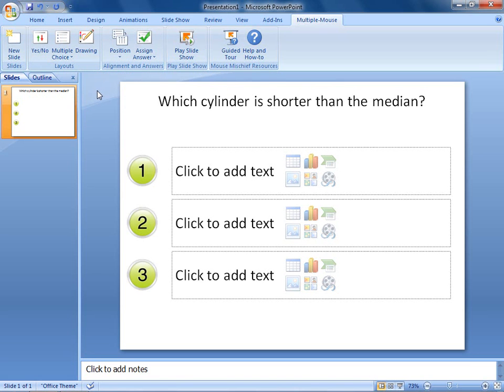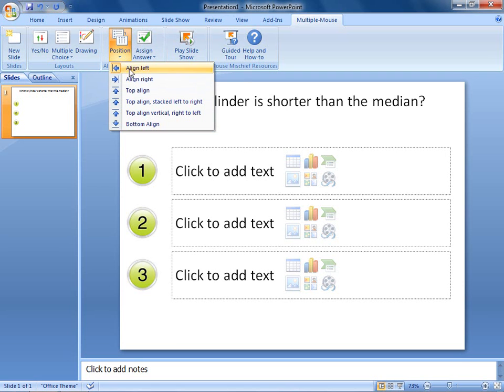Let's say I want to reposition the choices so that I can insert a tall, thin shape under each number. To do this, in the Alignment and Answers group, I click the Position button, then click the Top Align option.